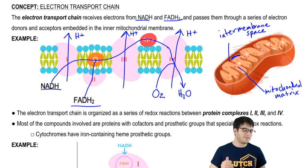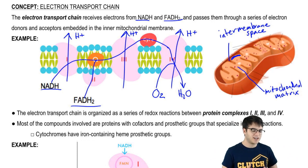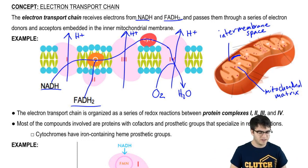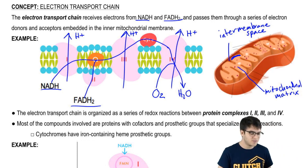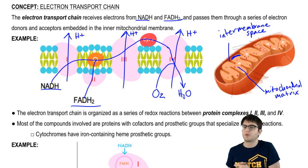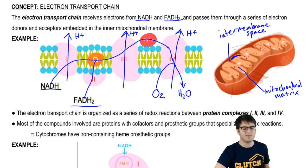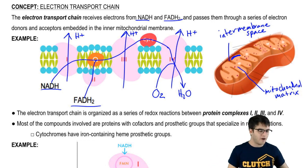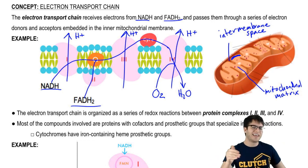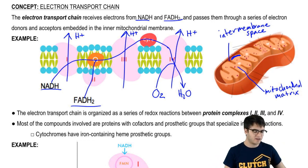So NADH and FADH2 dump their electrons at the electron transport chain, which oxidizes them so that they can then go back to those earlier processes and pick up more electrons. And all of this is happening on that internal membrane of the mitochondria.